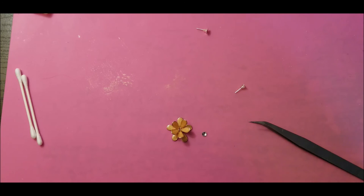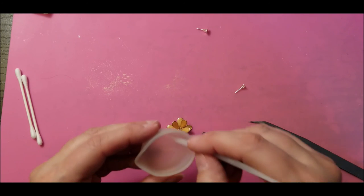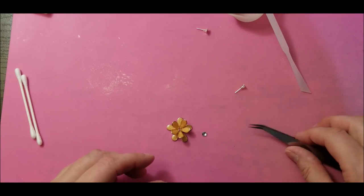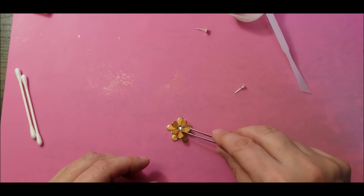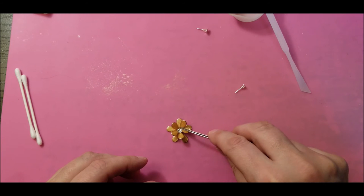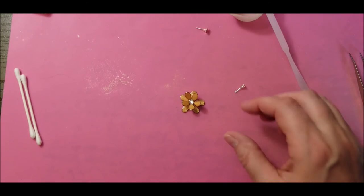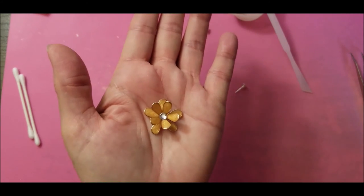Next you'll be placing your rhinestone, so just a little dab in the center. Then we'll cure this for 90 seconds. The flower is finished curing.